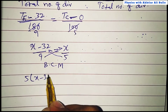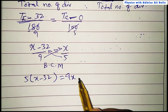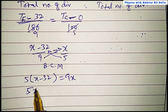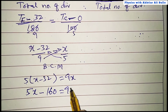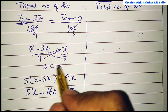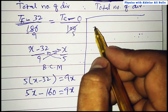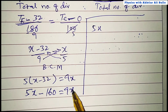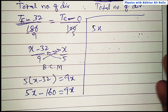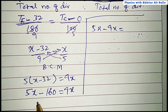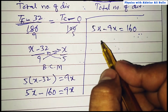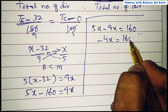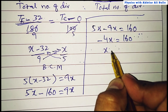By cross multiplication, we get 5(x − 32) = 9x, which gives 5x − 160 = 9x. Taking all x values to one side: 5x − 9x = 160, so minus 4x = 160.